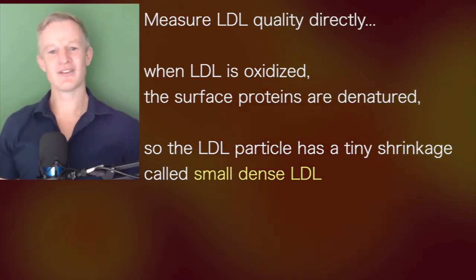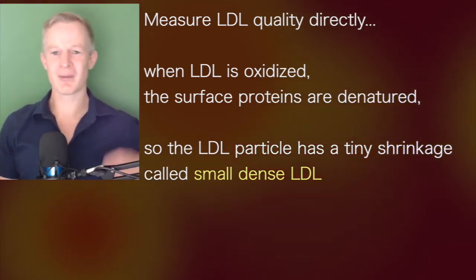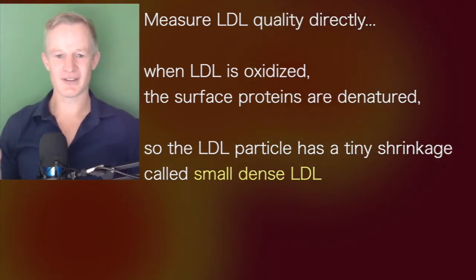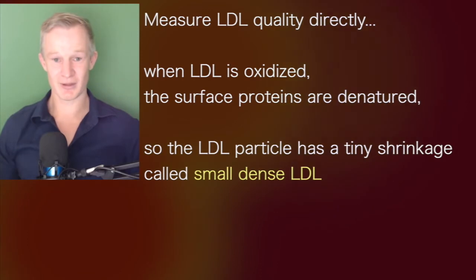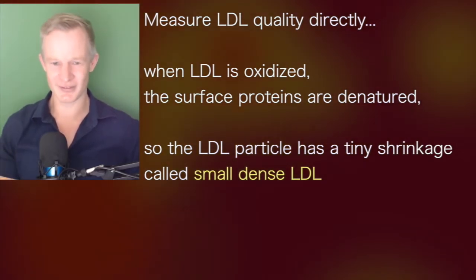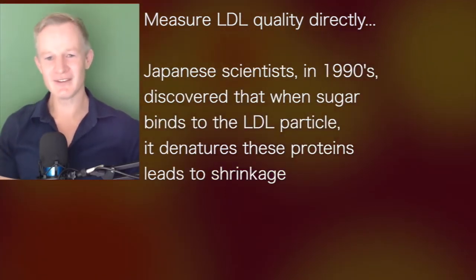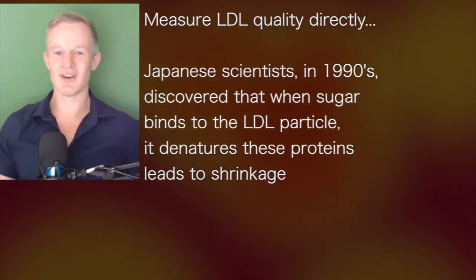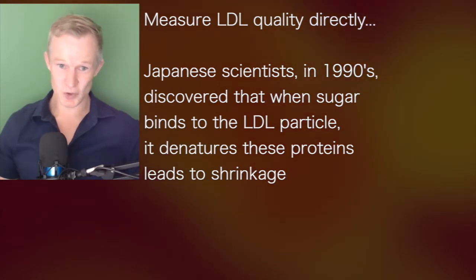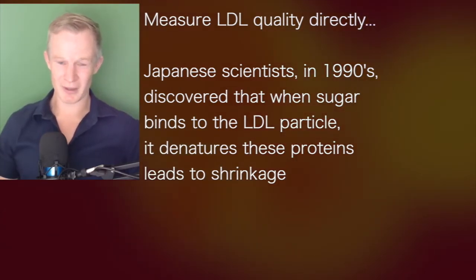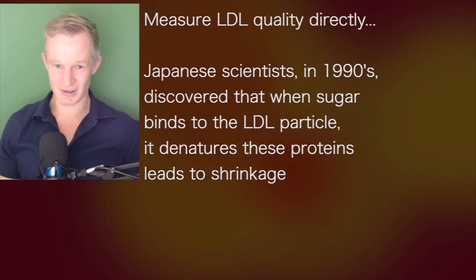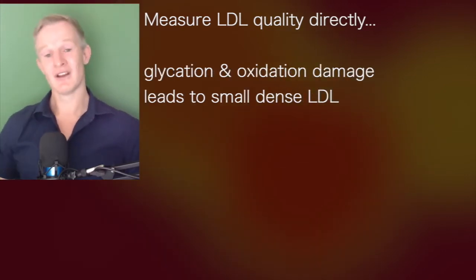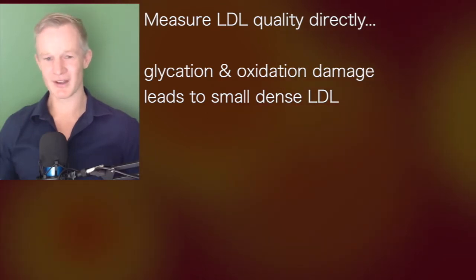This is what we call small, dense LDL. It's actually a somewhat misleading term because the size difference between so-called large fluffy molecules and small dense particles is infinitesimally small — measurable, but tiny. Japanese scientists back in the 90s figured out that when sugar binds to the LDL particle, it denatures these proteins and leads to shrinkage. So both glycation damage and oxidation damage lead to small, dense LDL.